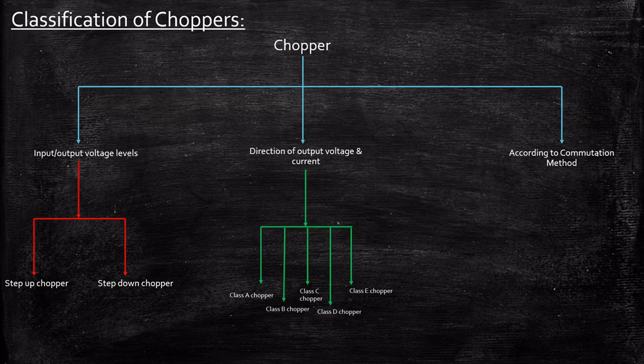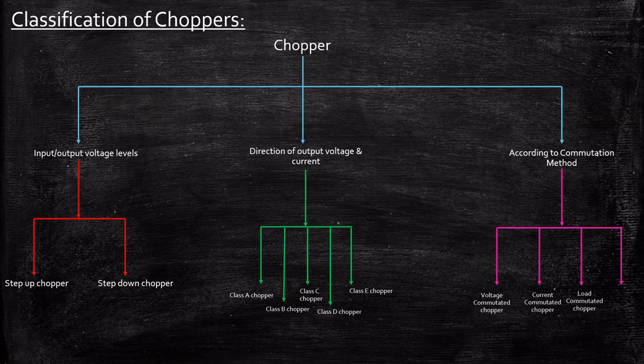So in this video I just wanted to give an overview of what the basic classification is about. According to a commutation method, meaning by the nature of which we turn on turn off the switch, we have four different classification: voltage commutated chopper, current commutated chopper, load commutated chopper and impulse commutated chopper. We have not seen commutation methods as well which we will be seeing in the upcoming videos, but on a high level, commutation is basically the method that is used to turn off a particular switch.